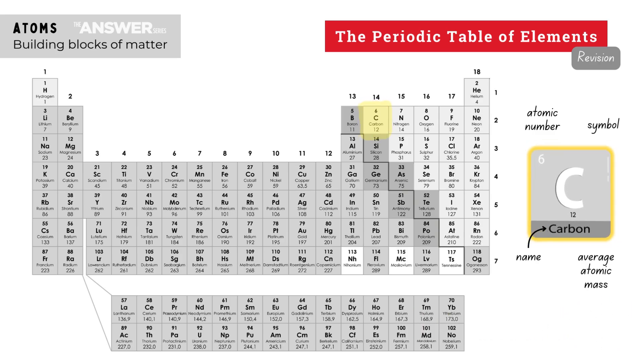For example, the sixth element on the periodic table is carbon. Its atomic number is therefore 6, its symbol is an uppercase letter C, and its average atomic mass is given as 12.